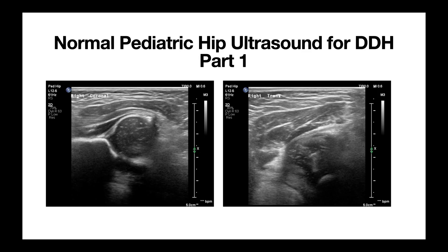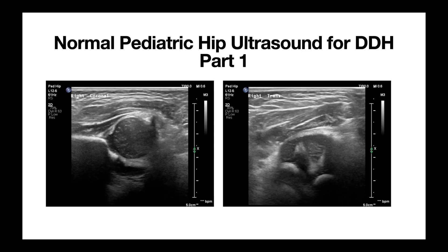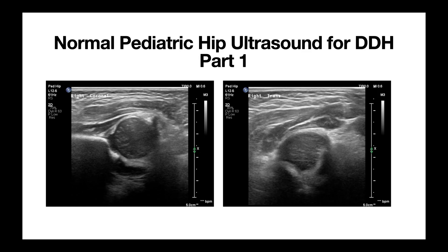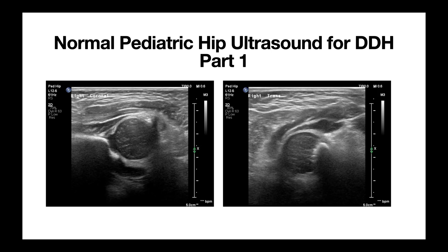That's it for normal pediatric hip ultrasound looking for DDH part one. Be sure to come back for part two, where we have an orthopedic surgeon explain the various maneuvers, the different types of harnesses that are available, and what imaging looks like in harness. If you like this video, please give me a thumbs up, and if you want to see more pediatric radiology related content, be sure to subscribe. Thank you.